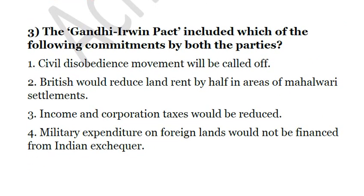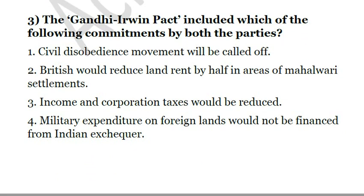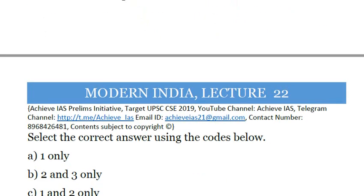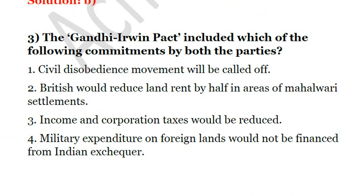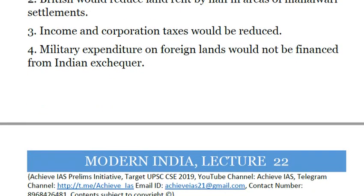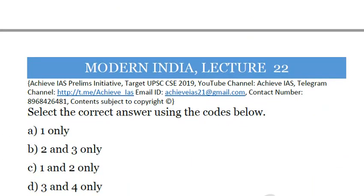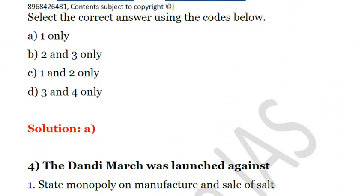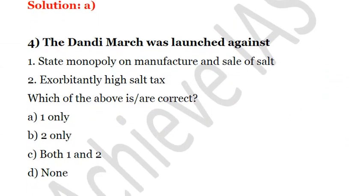Question 3: The Gandhi-Irwin Pact included which of the following commitments by both parties? First, Civil Disobedience Movement will be called off. Second, British would reduce land rent by half in areas of Mahalwari settlements. Third, income and corporation taxes would be reduced. Fourth, military expenditure on foreign lands would not be financed from the Indian exchequer. The Gandhi-Irwin Pact was related only to the first statement — Congress agreed to withdraw the Civil Disobedience Movement and participate in the Second Round Table Conference in Britain. The answer is A.